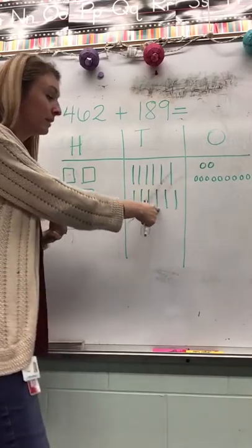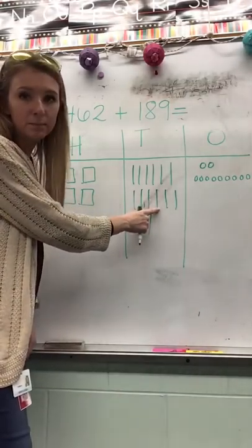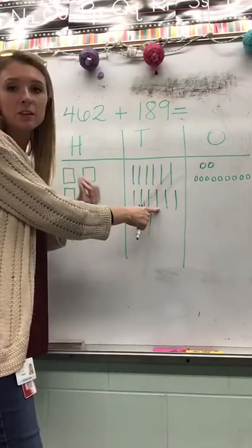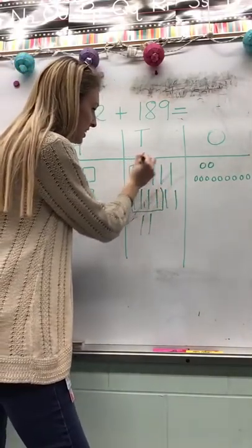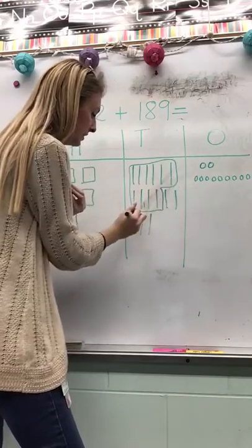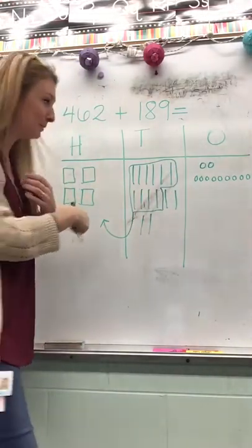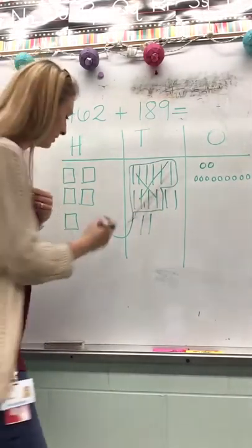There's a couple ways that you can do this. I never like to erase them because you always want to show what you did, and if you erase it there's no way to show that. So I like to draw either a box around it like this and draw an arrow that goes over to my hundreds place, because this shows that I regrouped these ten tens into one hundred.